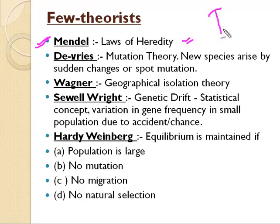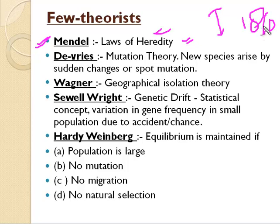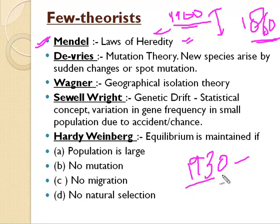These laws describe how different characteristics are transferred from parents to offspring. Mendel's laws of heredity are combined in the synthetic theory of evolution. Notably, Mendel gave his laws during Darwin's time, around 1860, but their importance was not recognized then. Only during the 1900s, almost 40 years later, was Mendel's theory given importance. This is why it is included in the synthetic theory rather than Darwin's theory. The synthetic theory itself came during the 1930s, when genetics was quite widely popular.